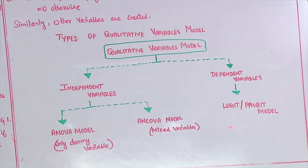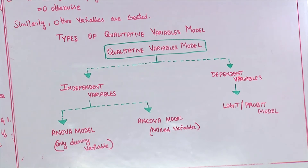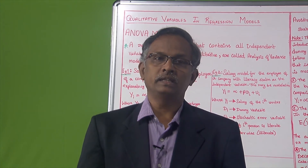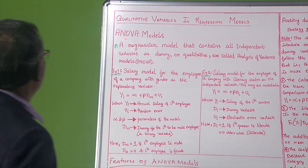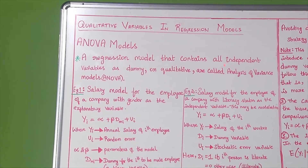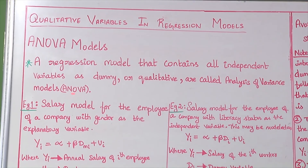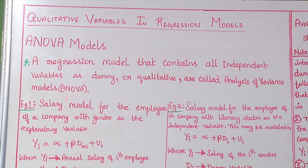The other broad category is qualitative variable models with dummy dependent variables. These dummy dependent variable models are called logit or probit models. A regression model that contains all independent variables as dummy or qualitative variables is called an analysis of variance model, shortly called ANOVA model.